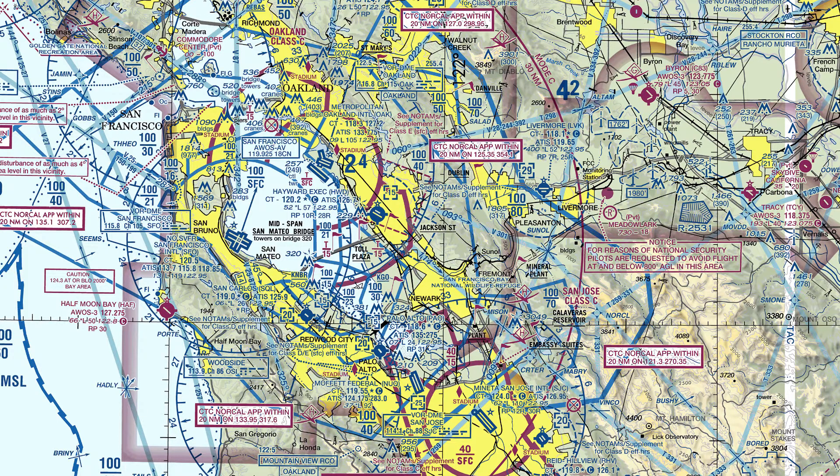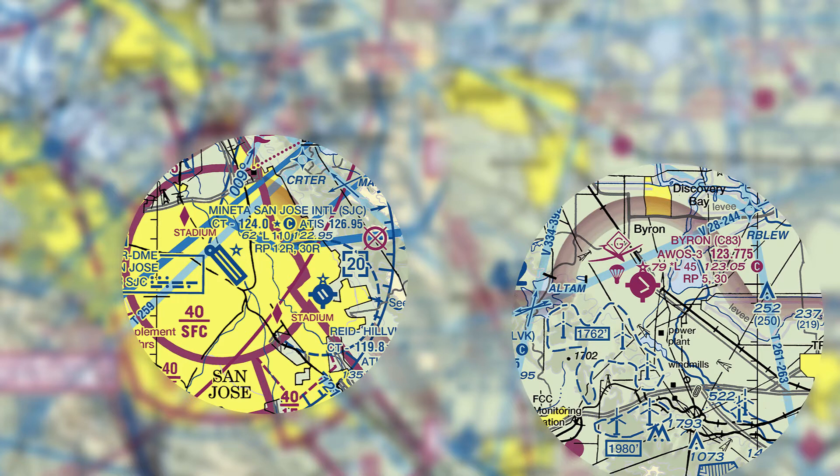Let's look at two airports side by side. On the left is San Jose Airport — depicted by two long rectangles — and on the right is Byron Airport, an uncontrolled airport. The first line of airport text is the name and identifier in parentheses. For San Jose, the control tower frequency is 124.0 with a star indicating part-time operation — when the tower is closed, it becomes uncontrolled. Also on that line is the ATIS on 126.95. For Byron, they have an AWOS system on 123.775.